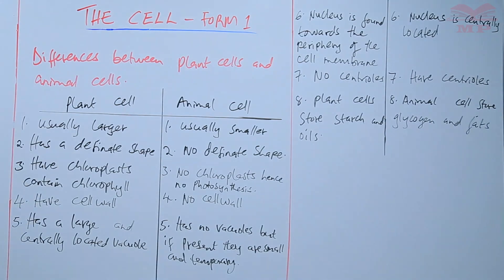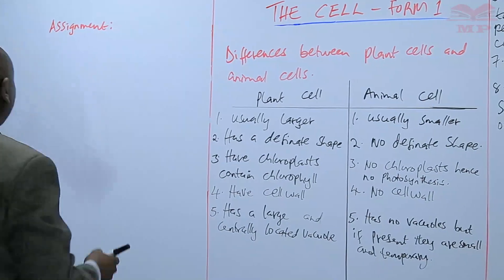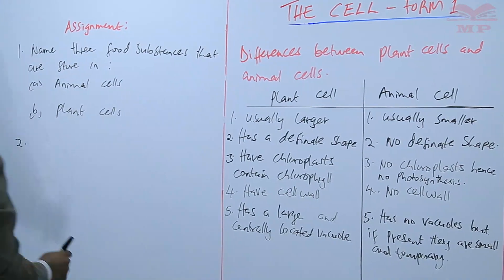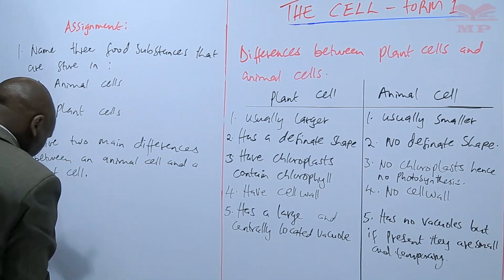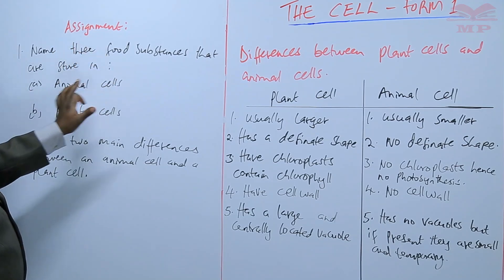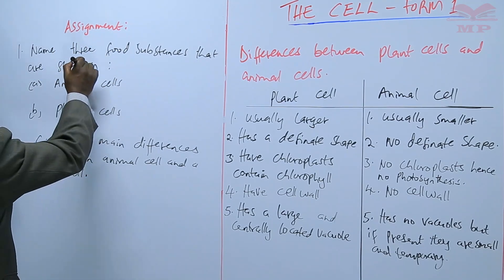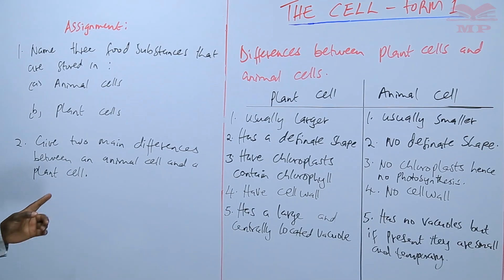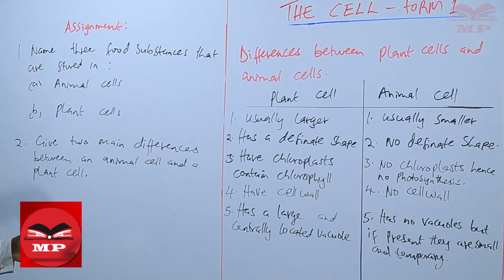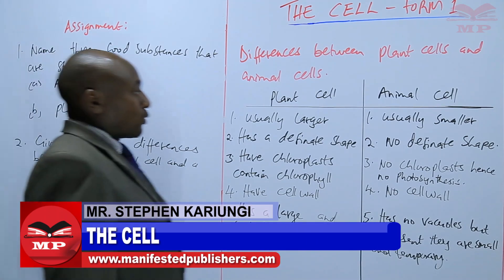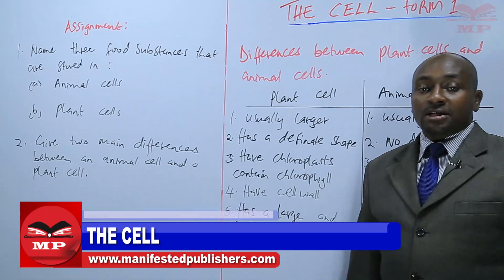We'll have an assignment on the same. Question one: name three food substances that are stored in A) animal cells and B) plant cells. Question two: give two main differences between an animal cell and a plant cell. We'll stop there and continue next time.